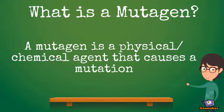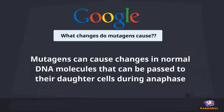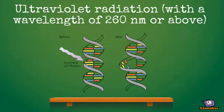A mutagen is a physical or chemical agent that causes a mutation. Mutagens can cause changes in DNA strands. One example is ultraviolet radiation with wavelengths of 260 nm or above, where the rays break the DNA strands and cause a mutation.